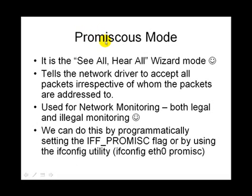Let's have a look at promiscuous mode before we move into raw sockets. Promiscuous mode is the see-all, hear-all wizard mode — the network card starts accepting all packets it can see, irrespective of whether they are destined to it or not. This is currently used by network monitoring tools, but a hacker could also use it to see all packets traversing the network. On Linux, promiscuous mode can be enabled programmatically by setting a flag on the device using an IOCTL — the flag is IFF_PROMISC. An easy command-line alternative is using ifconfig: running 'ifconfig eth0 promisc' places the eth0 device into promiscuous mode, where it will start listening to all packets.